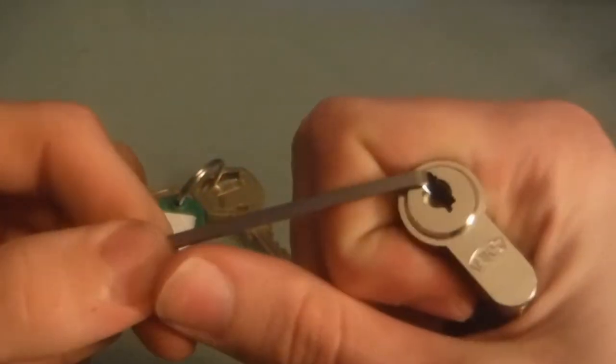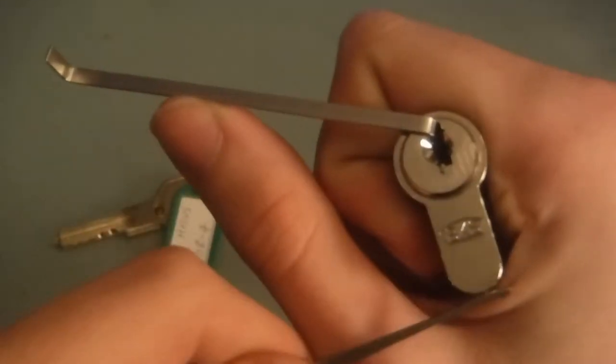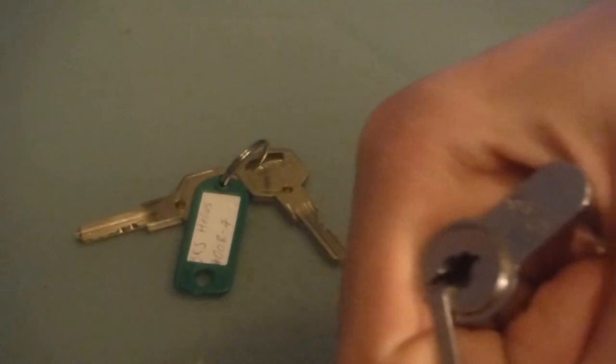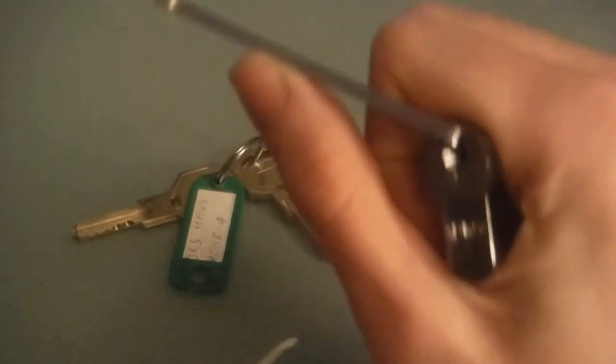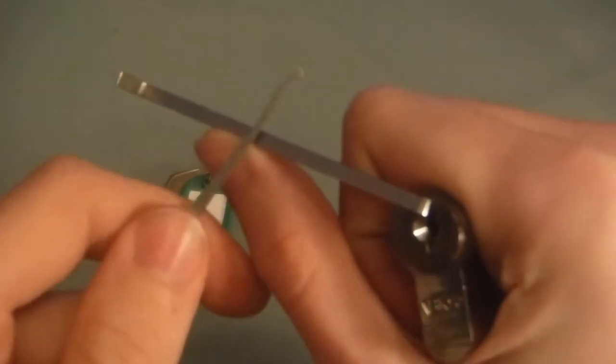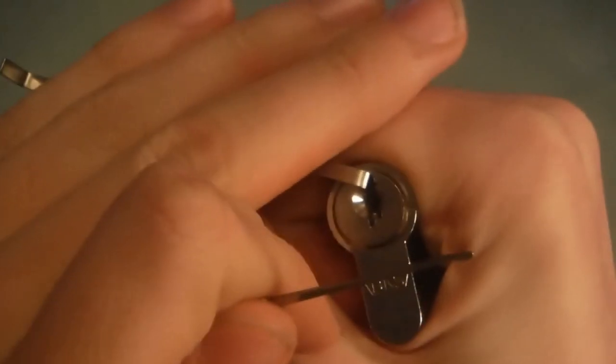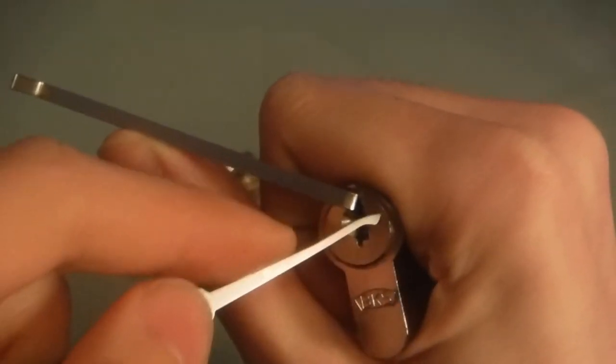But yeah, let's get on to picking it. So, as I said earlier, I'm going to be flipping it upside down, because the keyway would normally be like that. I'm going to be flipping it upside down and using the bottom of the keyway, and this is my thickest bottom wrench.